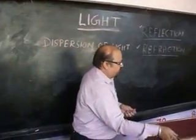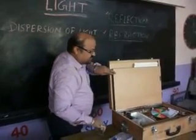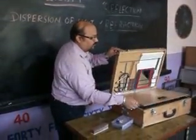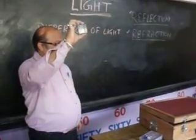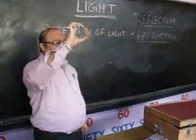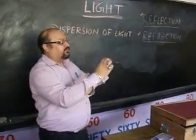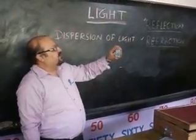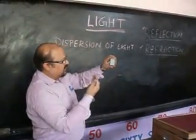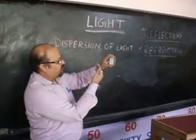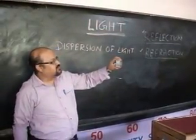To show dispersion of light, I will show you one physics device. Do you know this? What is the name of this device? Prism — very good! So when we see from one side of the prism, light falls from this side and comes out of this side. And when we see from this side, we can see seven colors. Please come, you can see this — yes?